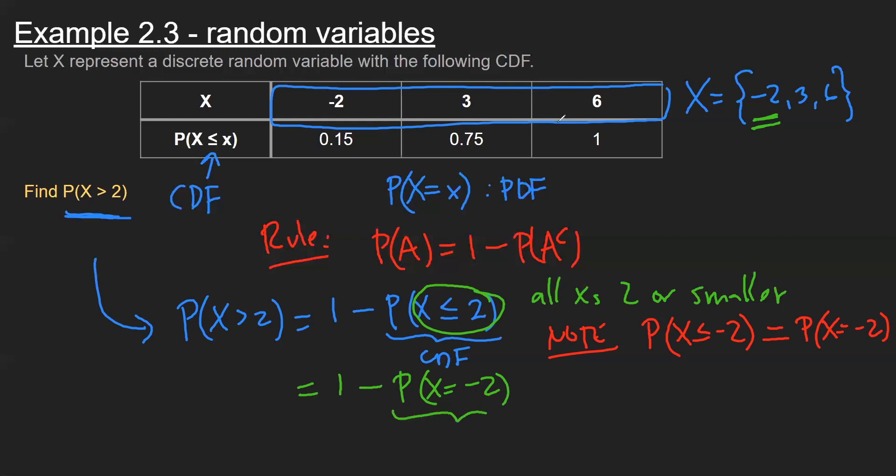Now I can substitute in this probability of negative two as the 0.15 that's on my CDF table, then finish off the question and do the subtraction to get the chance that X is bigger than two is 85 percent.